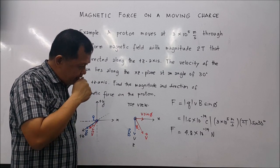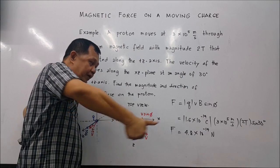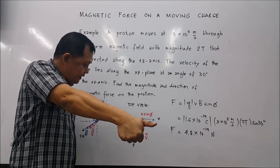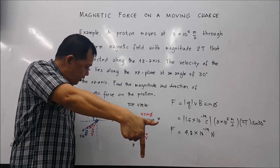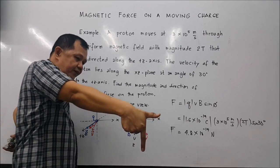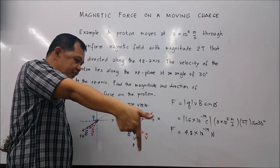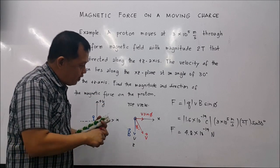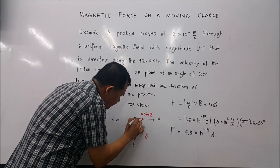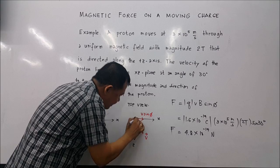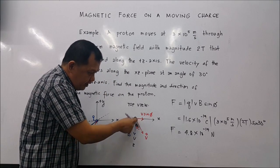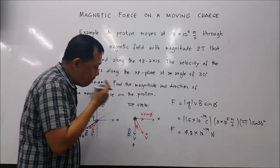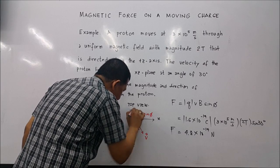The perpendicular component of velocity is directed toward positive x. The magnetic field is directed toward positive z. Applying the right-hand rule, the magnetic force is directed into the board — represented by a circle with an x — which corresponds to the negative y direction.